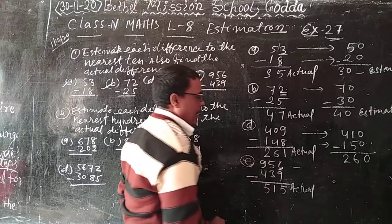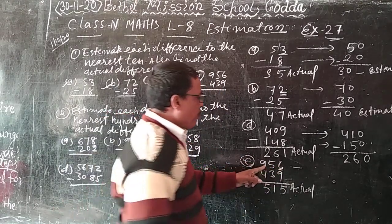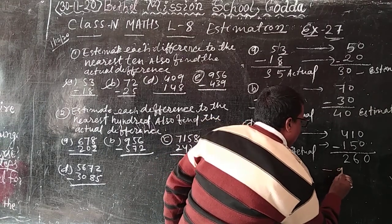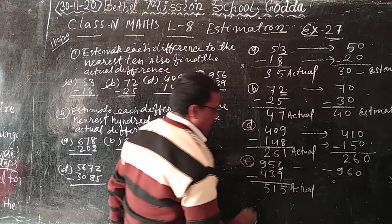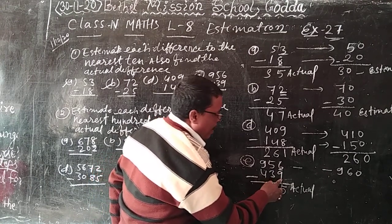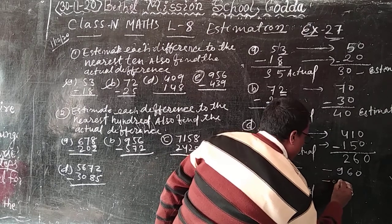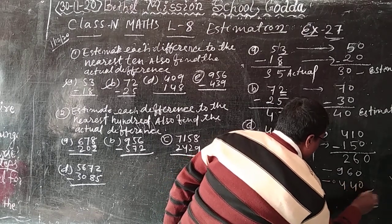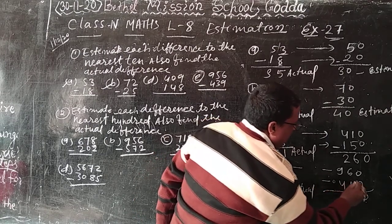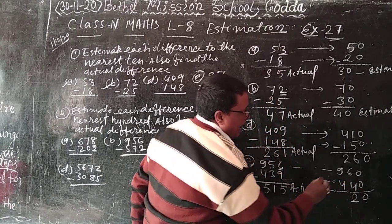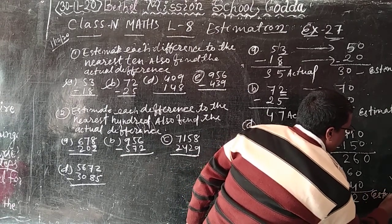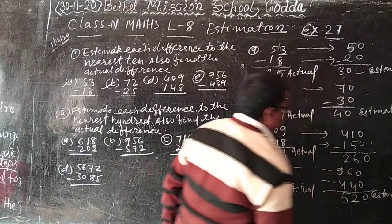Estimate, 6 is more than 5, so plus 1, 960. And 9 also more than 5, so plus 1, 440. 960 minus 440, 520 is estimate. Clear?